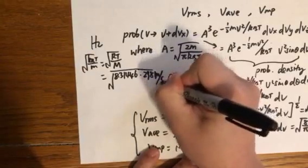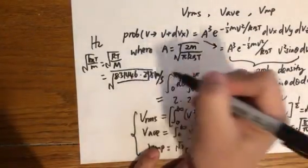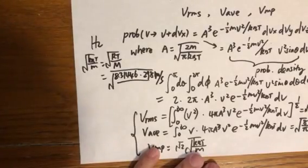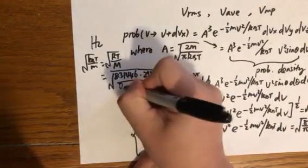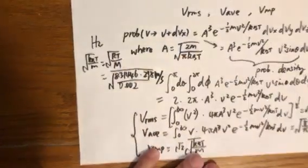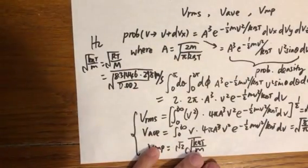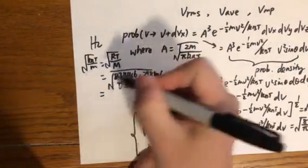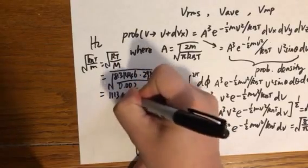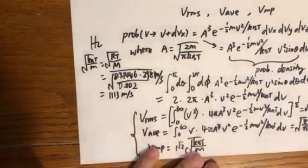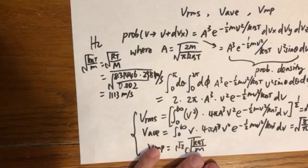I'm going to assume 298K. In the end, the unit is going to be meter per second. What about the molar mass of hydrogen 2? The mass of one mole of hydrogen 2 is 0.002 kg per mole. In the end, you get 1113 meter per second for the square root of kbT over m.